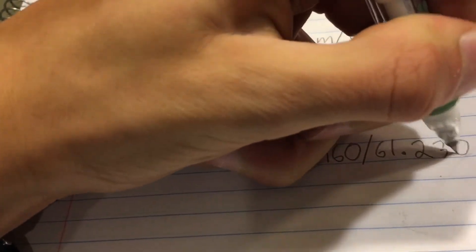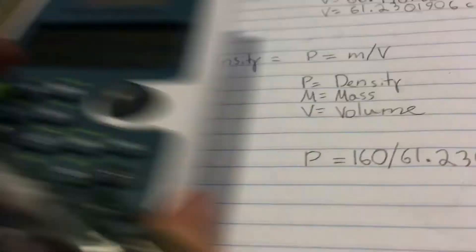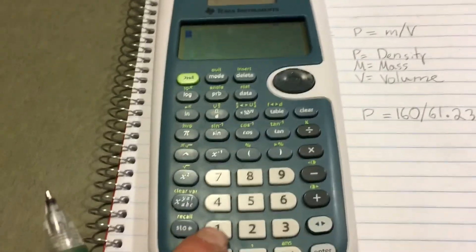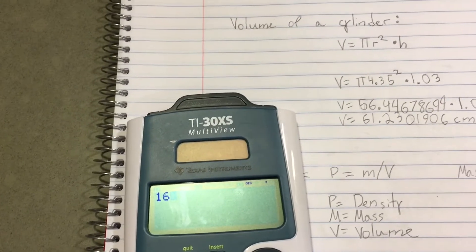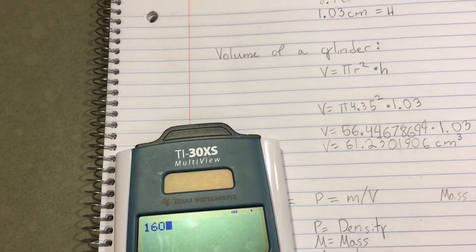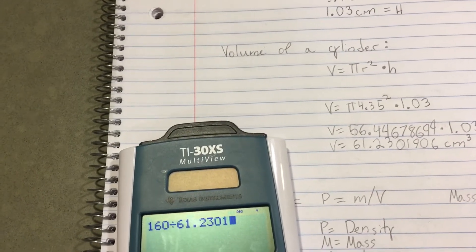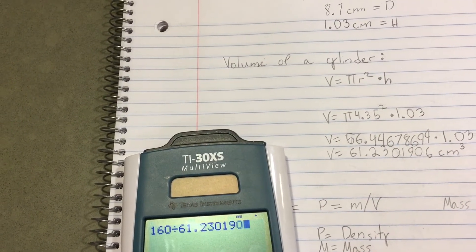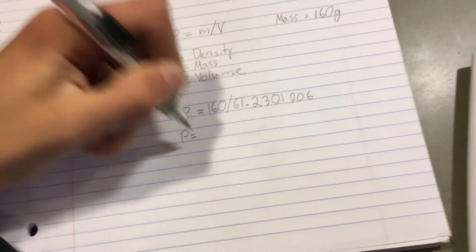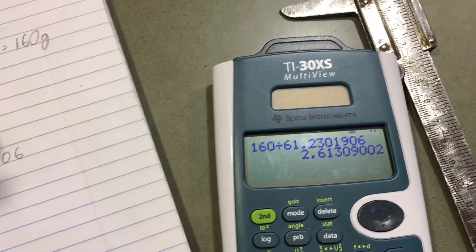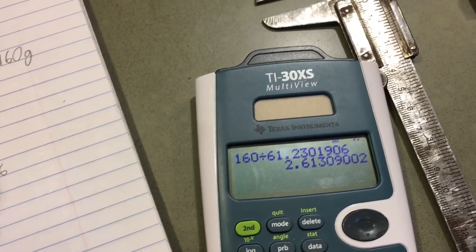Okay, let's put that in the calculator. 160 divided by 61.2301906, and that is our answer. Density of this object is equal to 2.6130900.